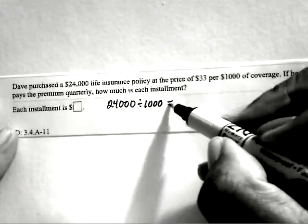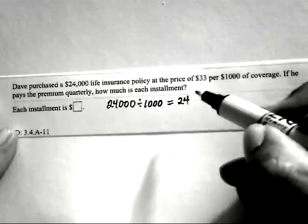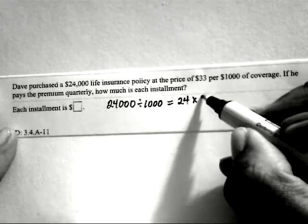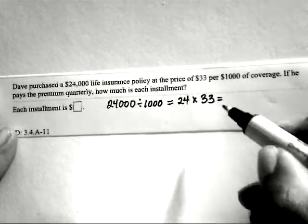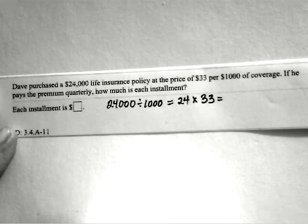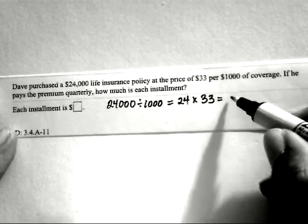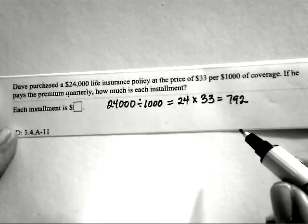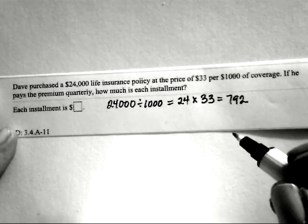Divide that by $1,000, that means that's going to be 24. And then we multiply that by $33, because that represents $33 per $1,000 of life insurance. So $24,000 multiplied by $33, you're going to get $792, and he's going to pay for this particular premium.